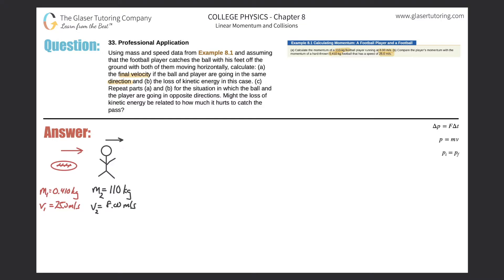The football is being thrown at a football player who will catch it — that's a collision. The velocity of the football is greater than the velocity of the player, so it will catch up. Since the player catches and holds the ball, this is an inelastic collision, so we'll use the conservation of momentum formula for inelastic collisions.